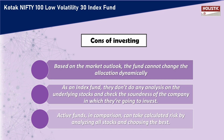Based on the market outlook, the fund cannot change its allocation dynamically. For example, if you invest in an actively managed fund and the market goes through a rough period, the fund manager can reallocate to better-performing stocks. But for an index fund, you cannot make dynamic allocation changes based on market outlook — you can only try to replicate the index, and cannot do what an active fund manager can do.